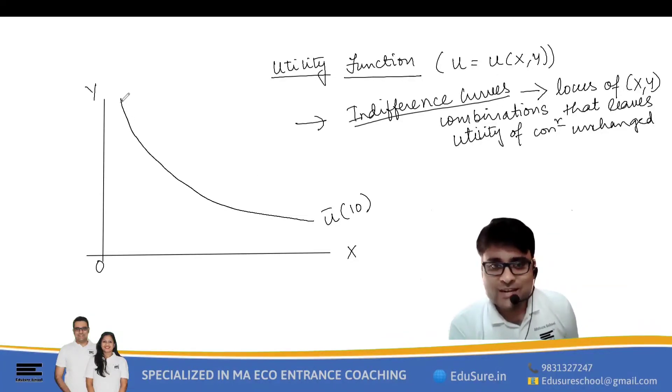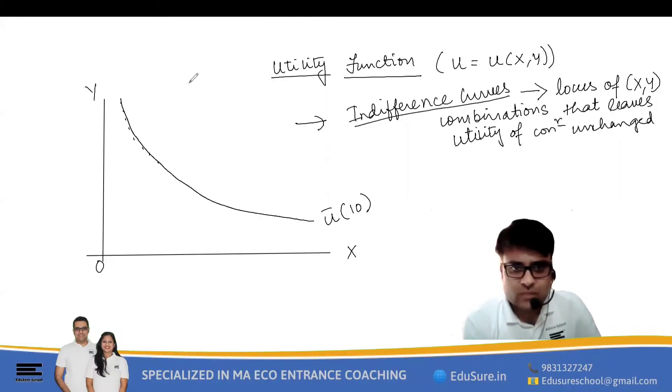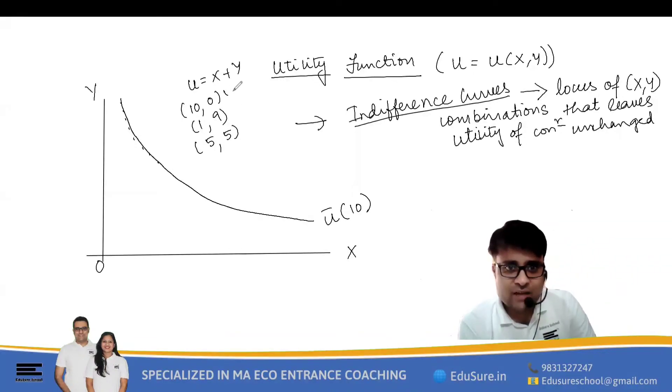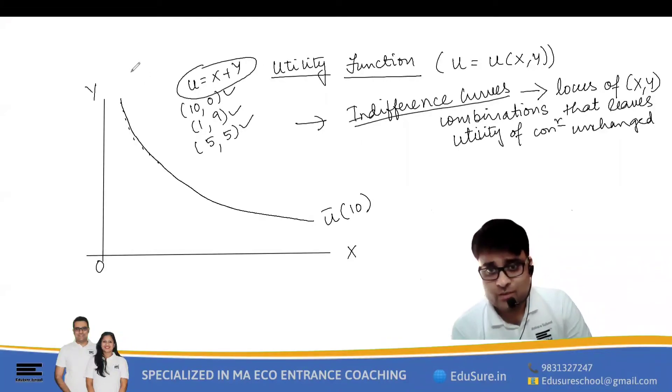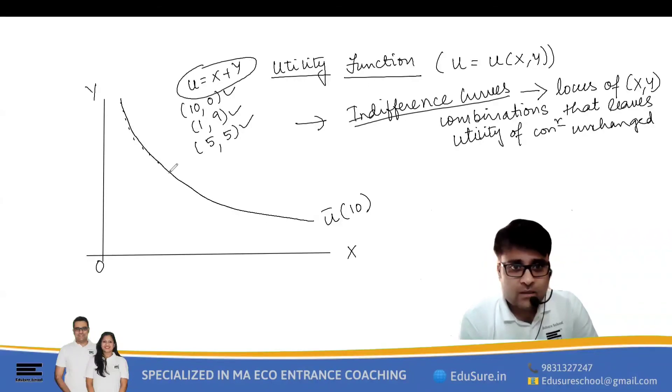For example, if my utility is say x plus y, then 10 comma 0, 1 comma 9, 5 comma 5—these are all different values of x and y which will keep my utility unchanged. So I draw the locus of XY combinations that leave my utility unchanged.